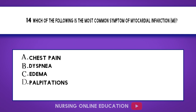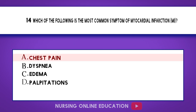Question 14. Which of the following is the most common symptom of myocardial infarction (MI)? A. Chest pain. B. Dyspnea. C. Edema. D. Palpitations. The answer is option A: Chest pain.